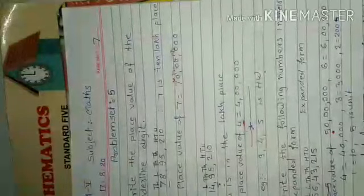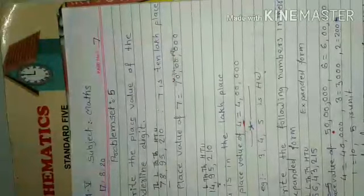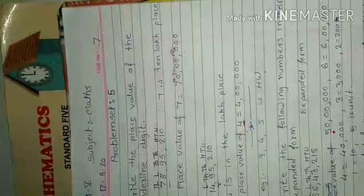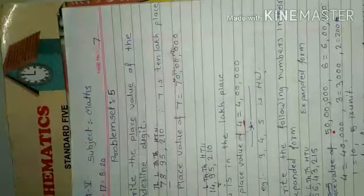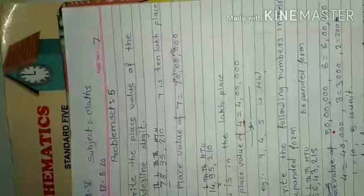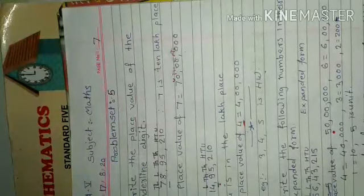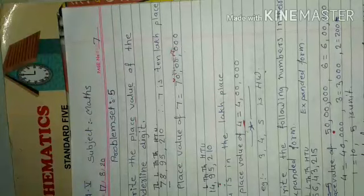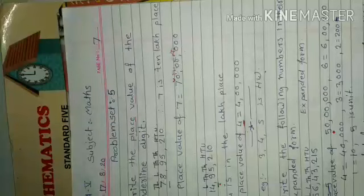We are going to learn lesson number 2, number work. In the last period we learned number reading up to lakh place and 10 lakh place. In that practice set we learned place value in digits. Now we learn place value of the underlined digit only, underlined digit.